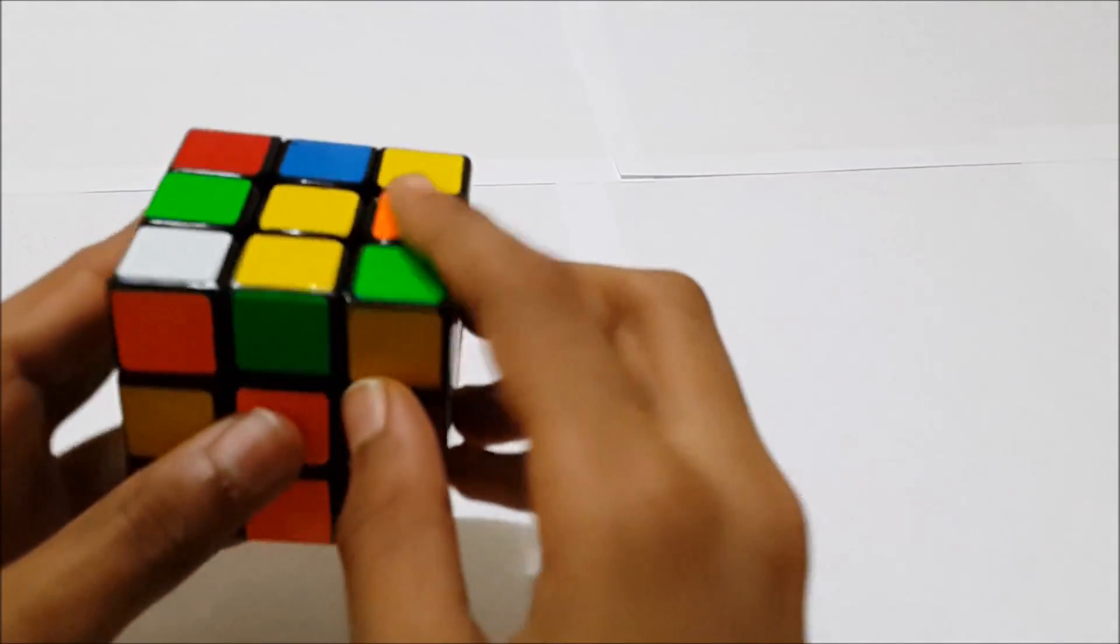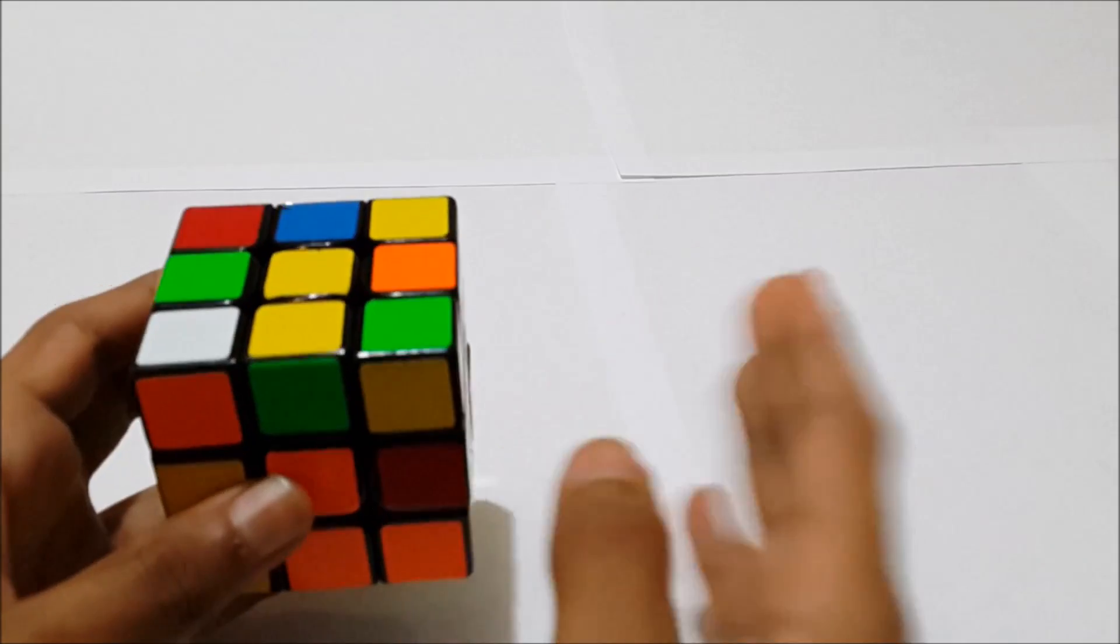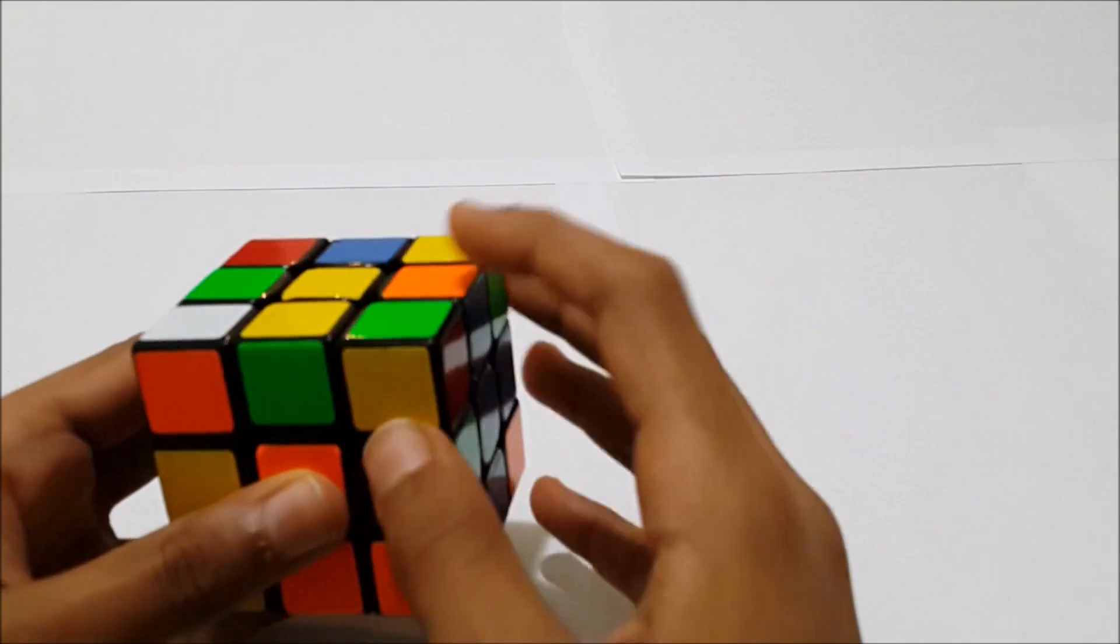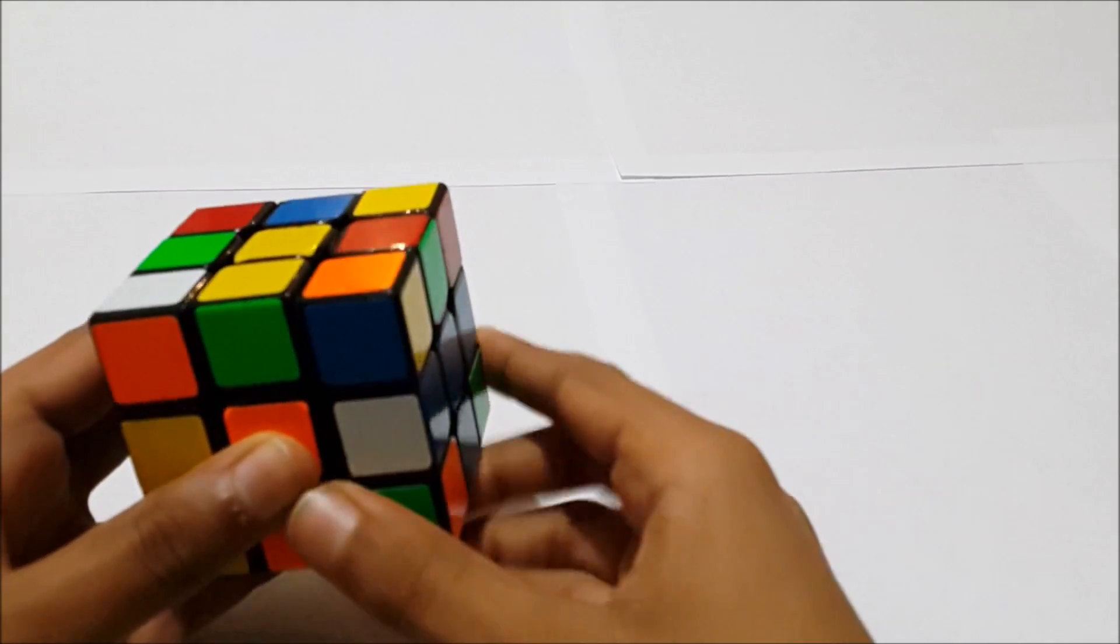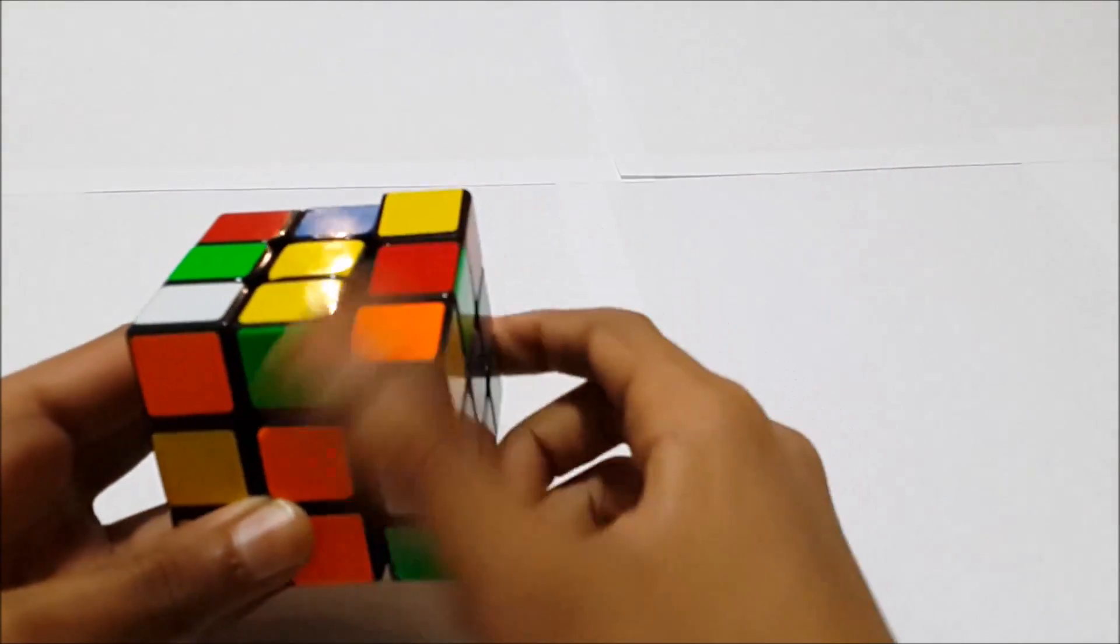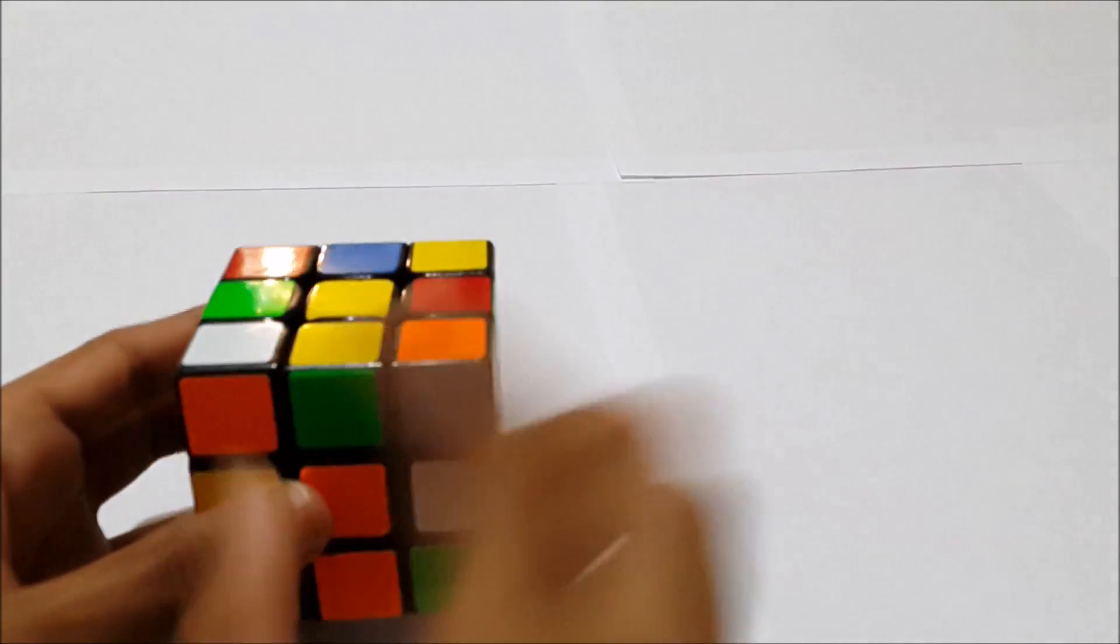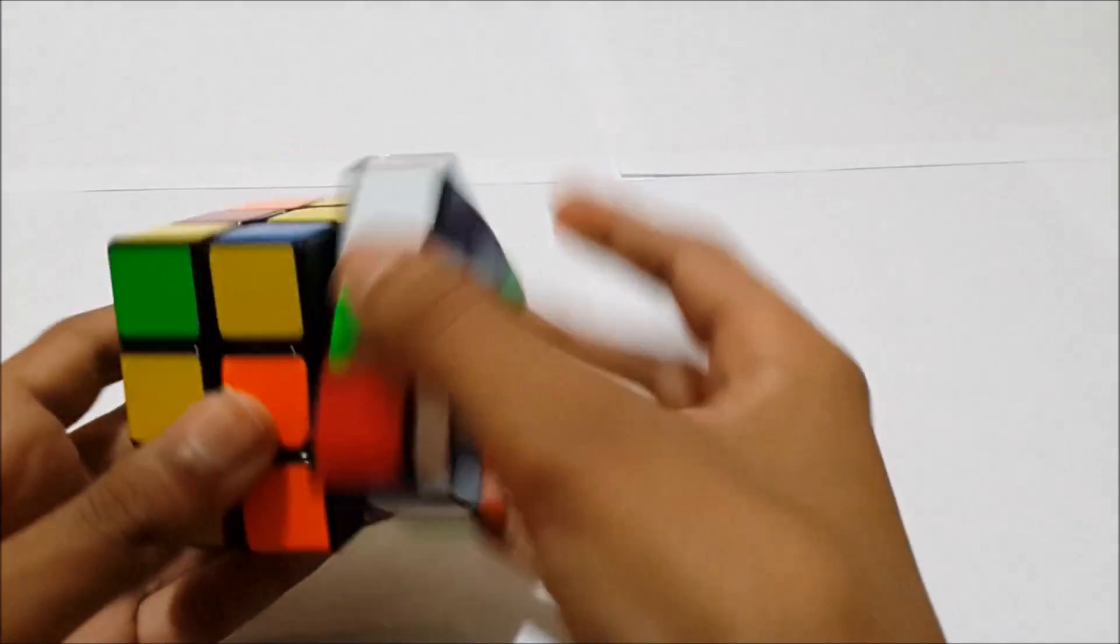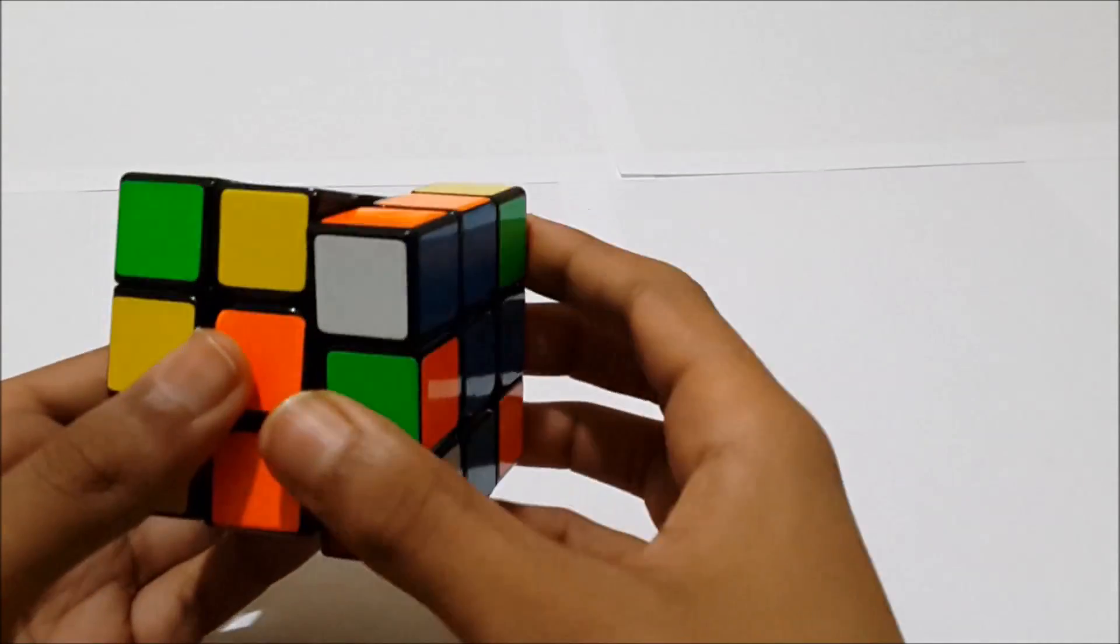And then since the top is orange, we're going to push the right, we're going to hold the thing we just lined up to the right. We're going to push that away. Since the top is orange, we're going to push it away from orange. And then we're going to take this corner and line it up in the back. And then just bring it back. And now you have a pair ready to insert.